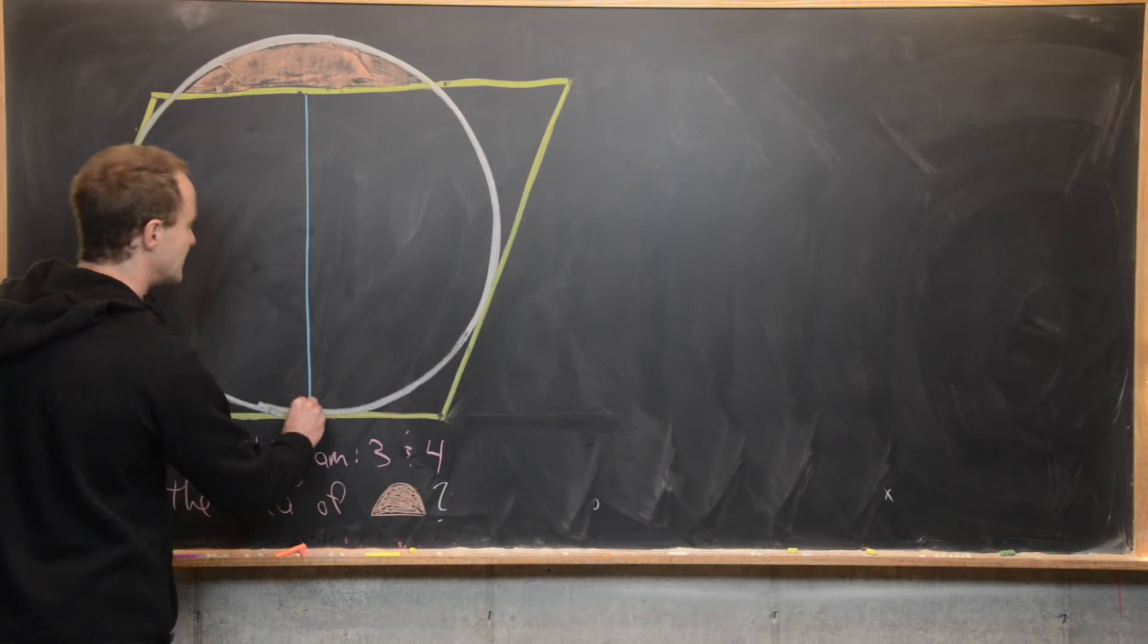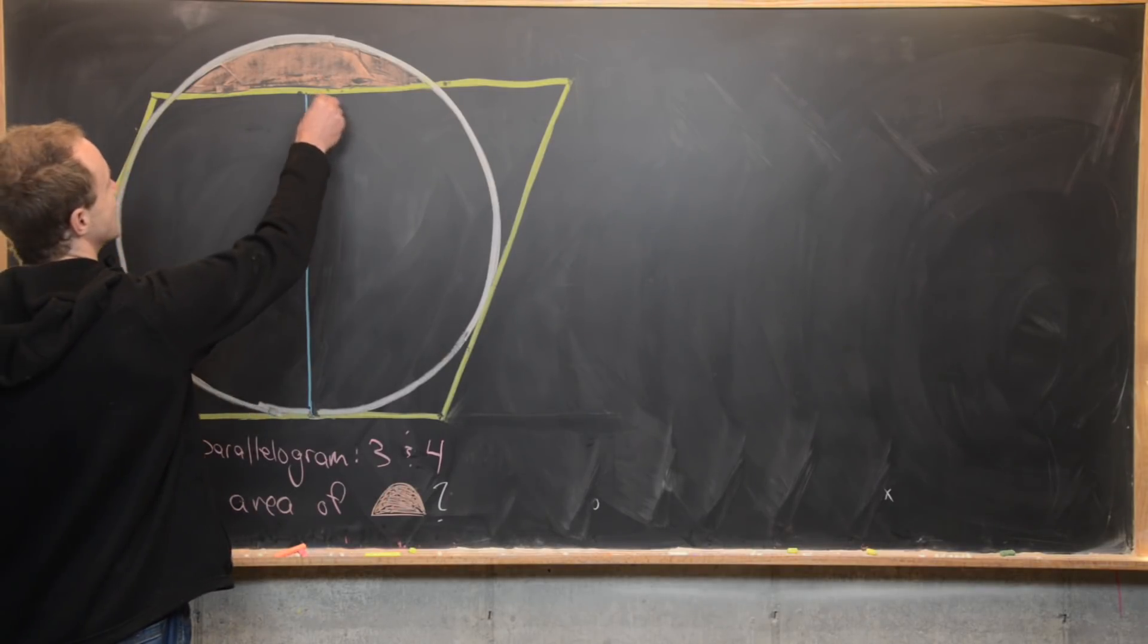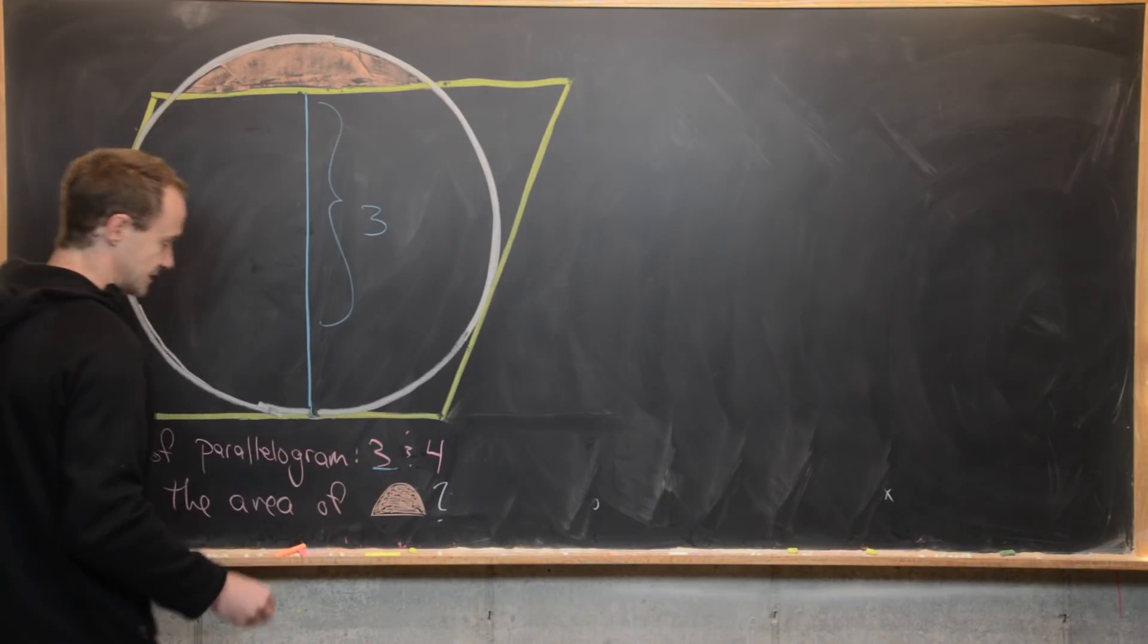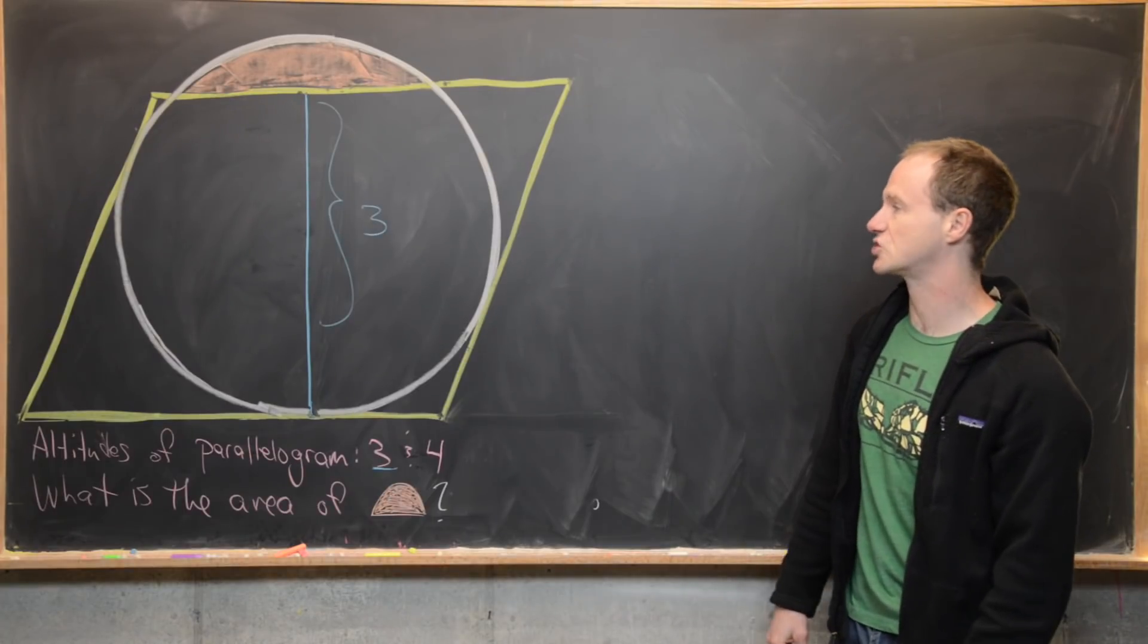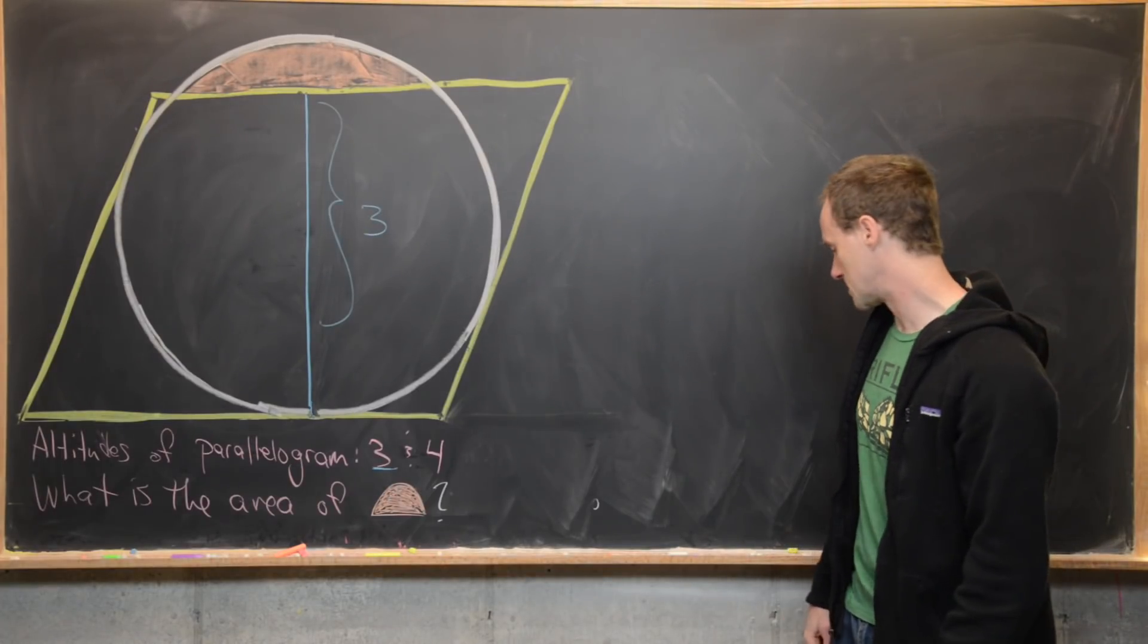Okay, good. And we know that the whole length of this is three because we have altitudes of this parallelogram three and four, and that is the shorter length. Okay, great.